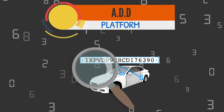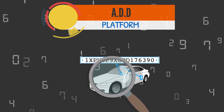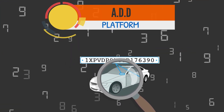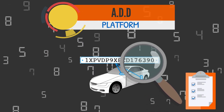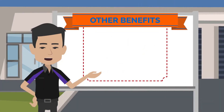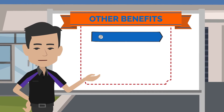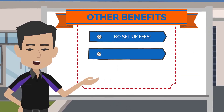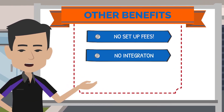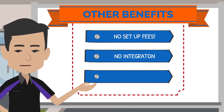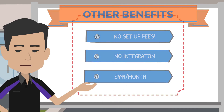The ADD platform then tracks the vehicle down to VIN number and lets the dealer know if the vehicle sold on your monthly report. Additional benefits include no setup fees, no integration with your inventory is typically needed, and plans start as low as $4.99 a month.